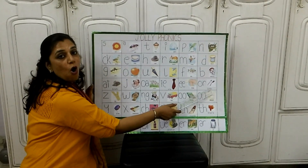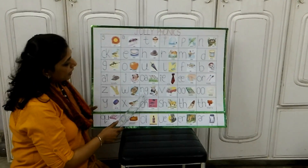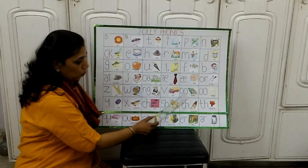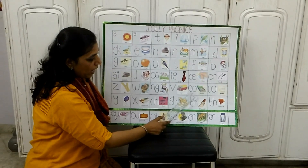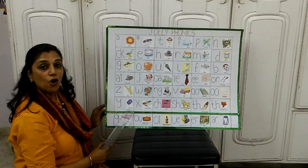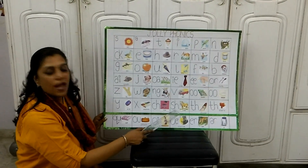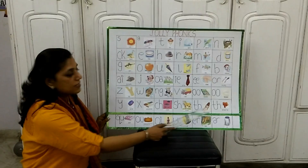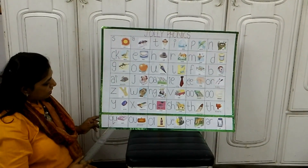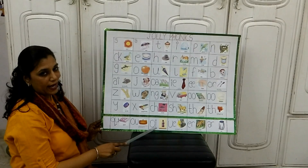Z as in zip. W as in watch. NG as in king. V as in van. OO as in book. OO as in moon. Y as in yo-yo. X as in box. CH as in chair. SH as in she. TH as in thumb. TH as in there. QU as in quilt. OI as in pouch. OI as in oil.